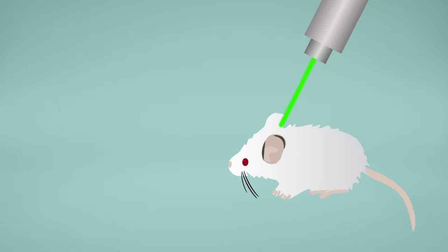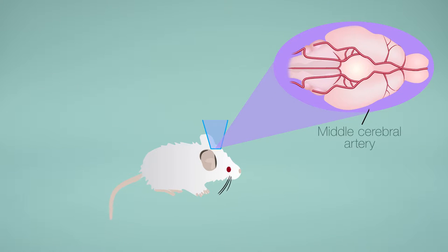Using lasers and a photosensitive dye, researchers set off strokes without needing to put animals to sleep, allowing them to finally disentangle the role of anesthetics on these often devastating events. The team first installed cranial windows in 22 rats to provide access to a critical artery in the brain.